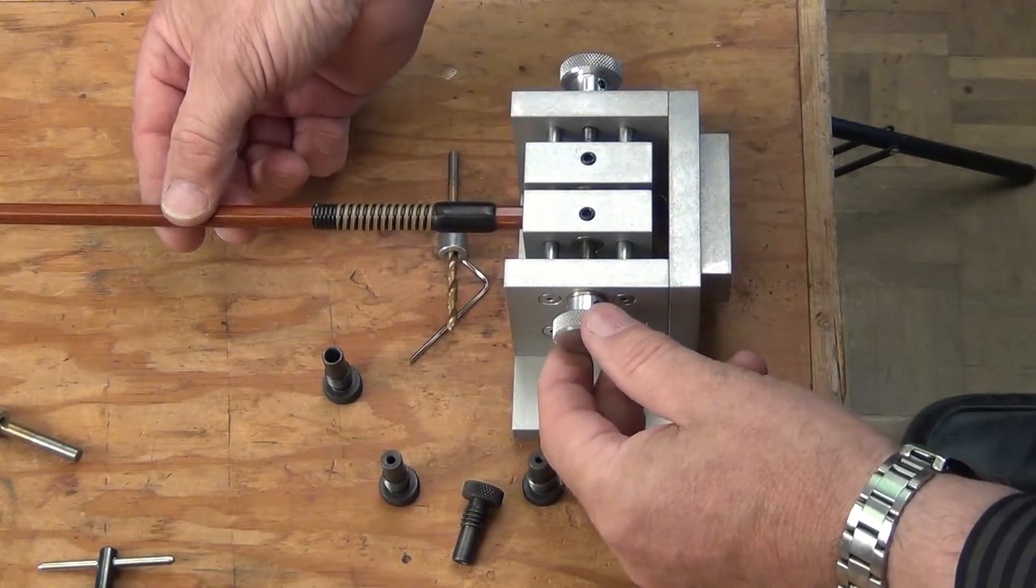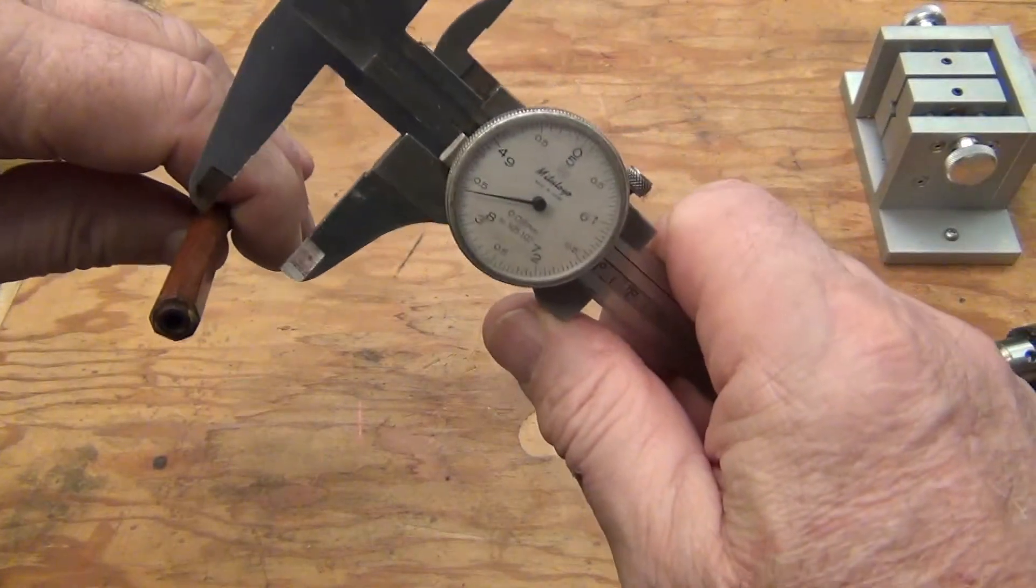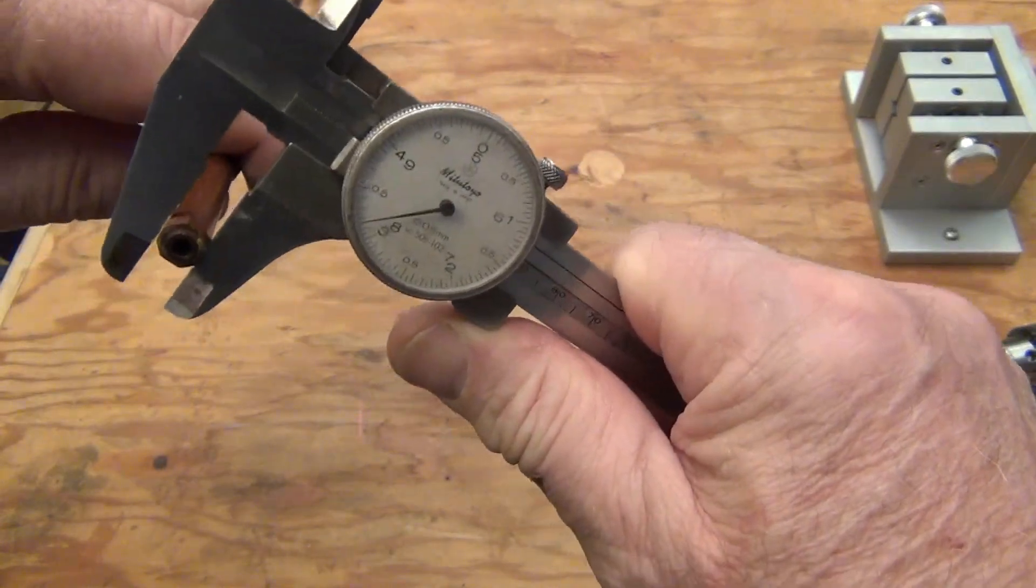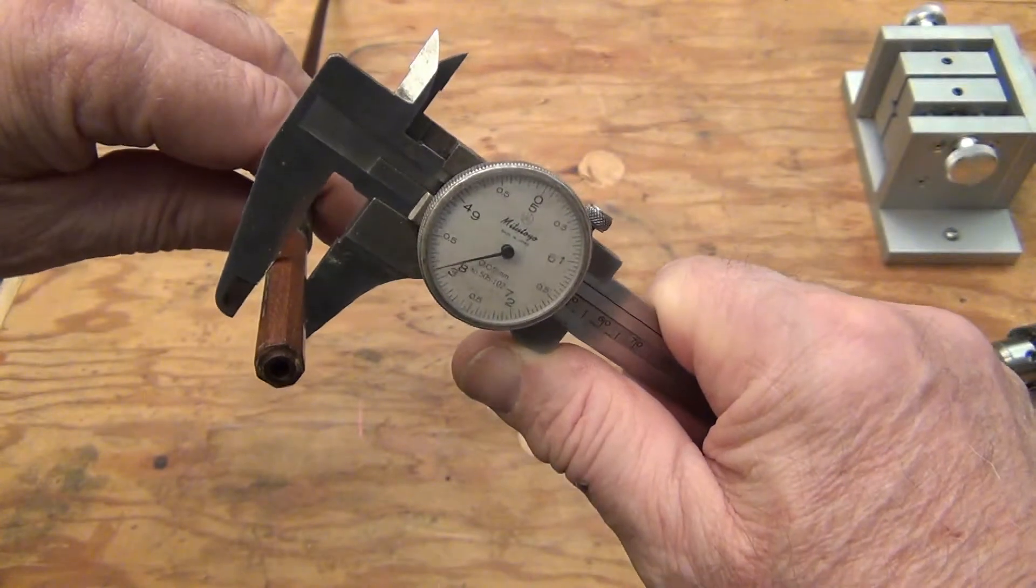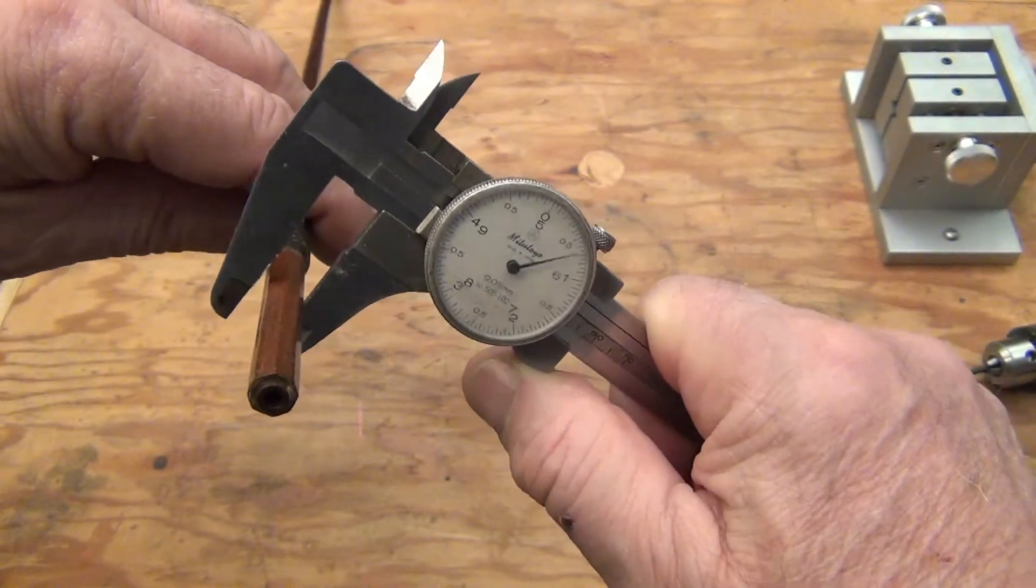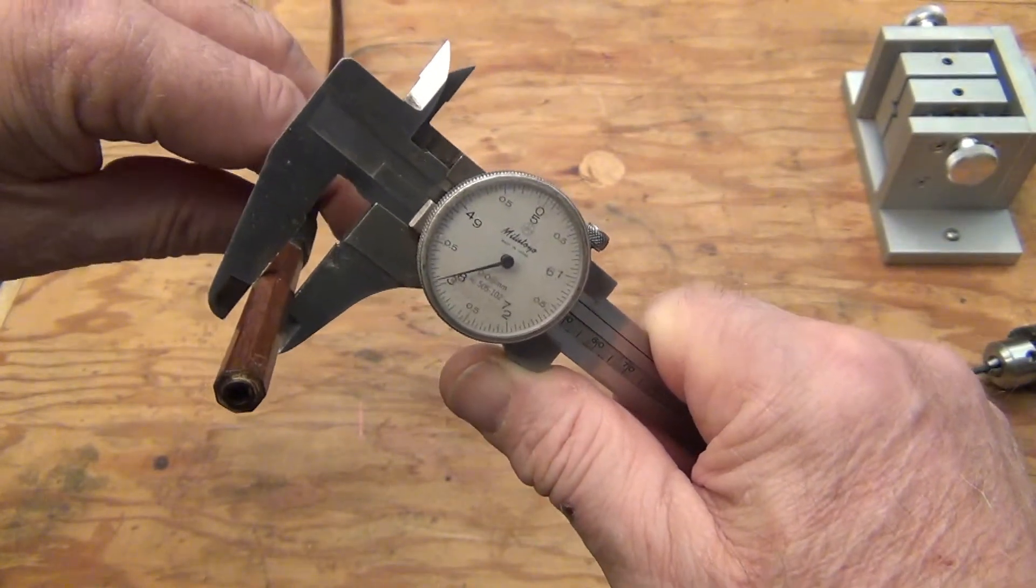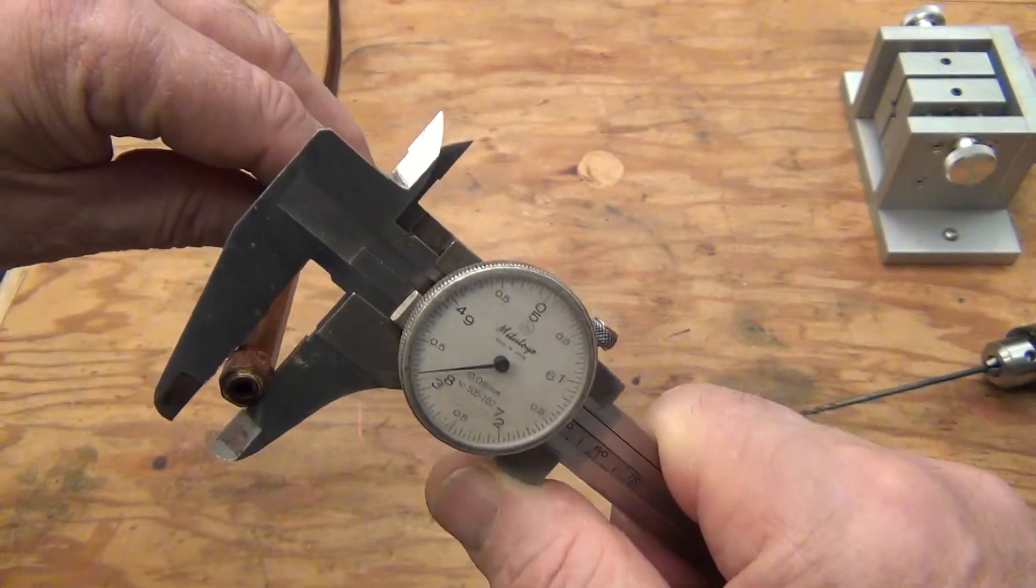To start, measure the butt with an accurate micrometer to determine if it is the same in depth and width along the last two inches. The vise is 2 inches long, which is 50 millimeters in the metric world. It will grip that much of the bow butt.